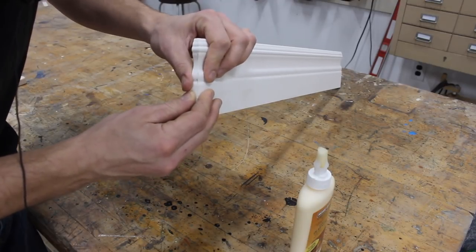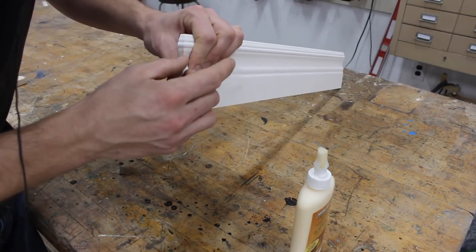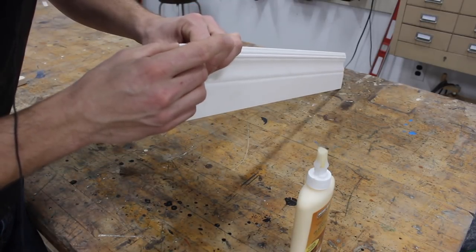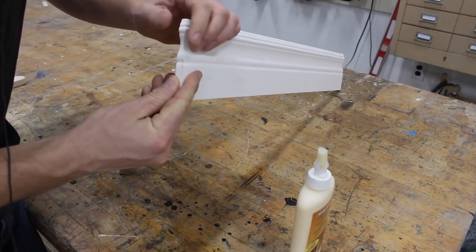Nice thing about wood glue is it's kind of a gap filler too. So if it oozes out, just wipe it off with your finger. I find with wood glue it tacks up quite quickly.